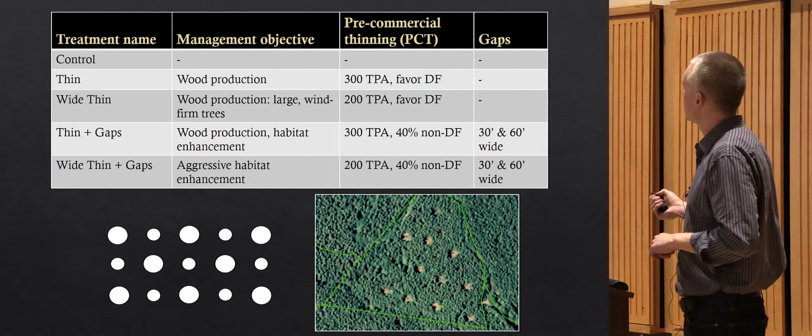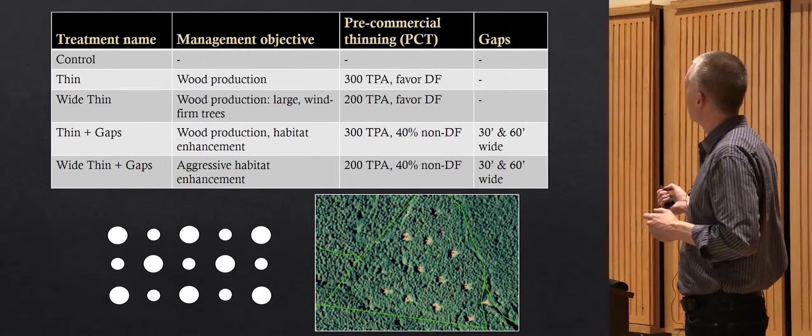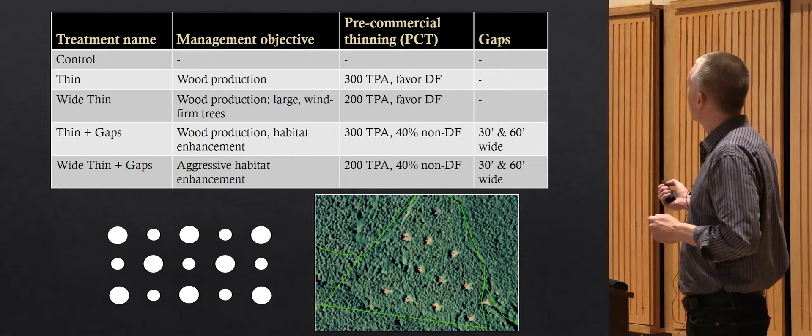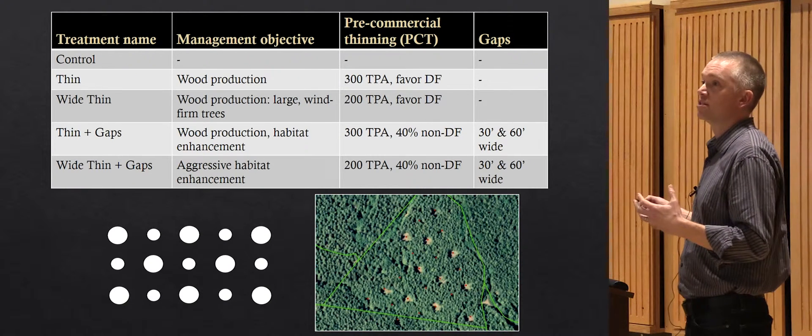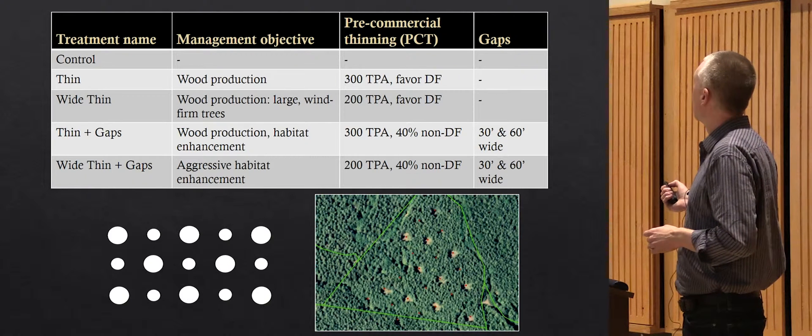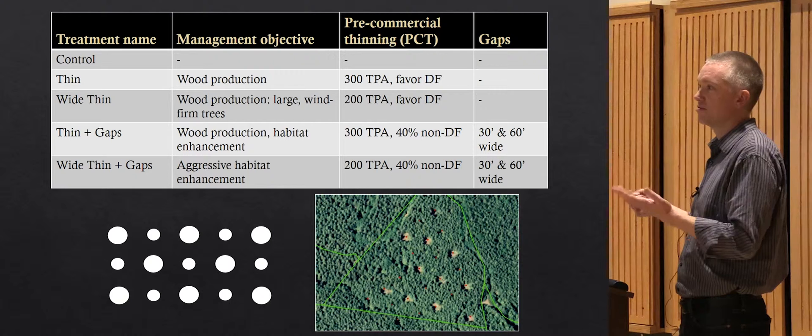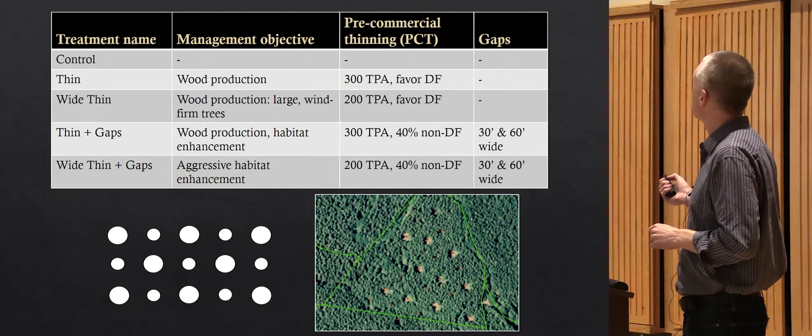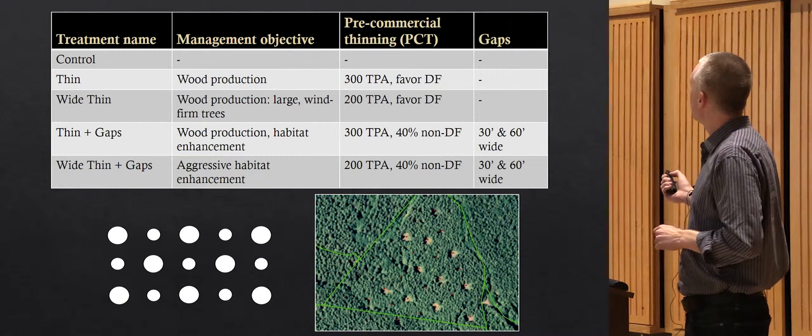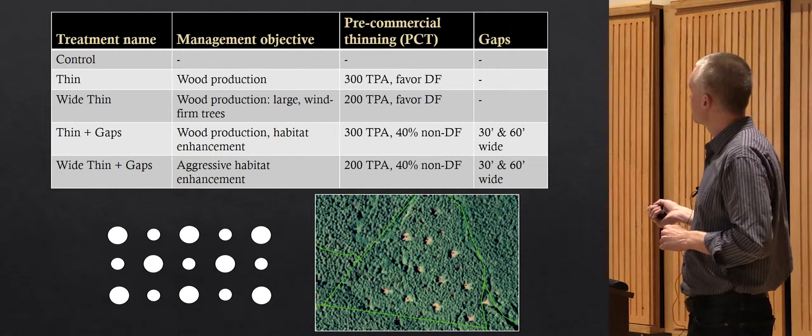We have this thin plus gaps treatment. The goal was wood production combined with habitat enhancement. 300 trees were left, but they tried to diversify the species in the forest canopy by leaving 40% non-Douglas fir. Additionally, they added 30 and 60 foot gaps, and the gaps were left in this type of pattern.